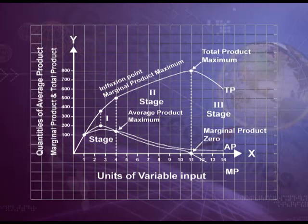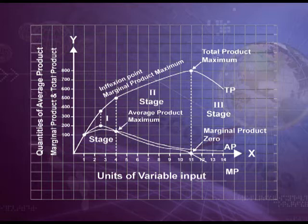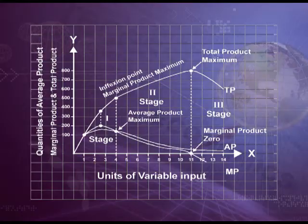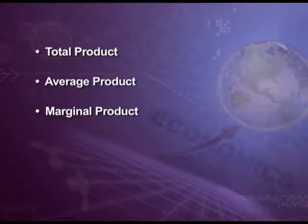This diagram can be divided into three stages. Stage one ends at the fourth unit where average product is maximum at 110 units and marginal product equals average product. The second stage ends at the 11th unit where marginal product becomes zero and total product is maximum. After the 11th unit, the third stage begins. Before understanding the three stages, we should first understand the three technical terms: total product, average product, and marginal product.